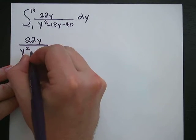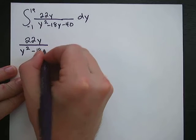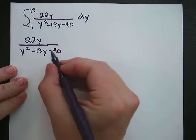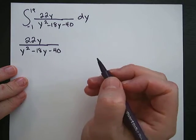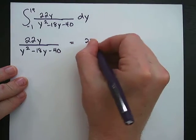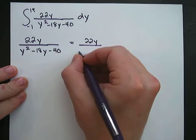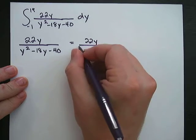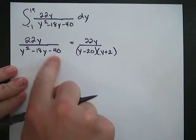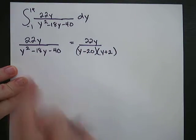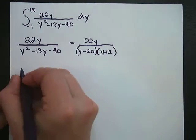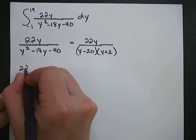The denominator can be factored. We need two things that multiply to get 40 but add to get negative 18. So you factor that into (y minus 20) and (y plus 2). They multiply together to get 40, and those two inner terms add together to give you negative 18. Once you factor it, you can start decomposing it.